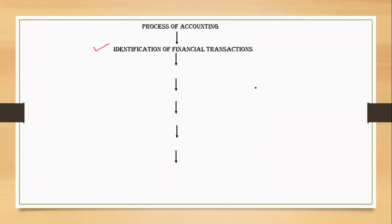The first step is identification — we need to identify transactions of a financial nature. Once identification is done, we need to prepare the vouchers. The voucher and source document are two different things: source documents are the original documents or evidence of transactions, and based on them, vouchers are prepared by the accountant specifying the accounts to be debited and credited.